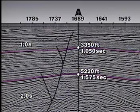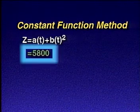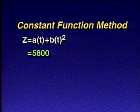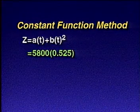Let's calculate the depths to the top and base of this zone. The depth to the top of the zone would be a constant, say 5,800, times 0.525 for one-way travel time.